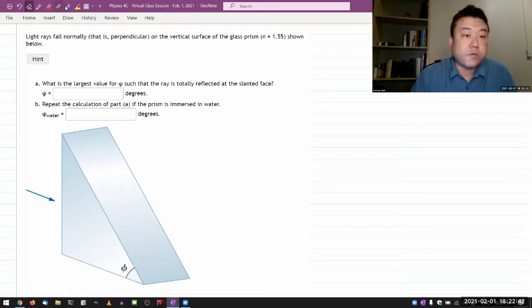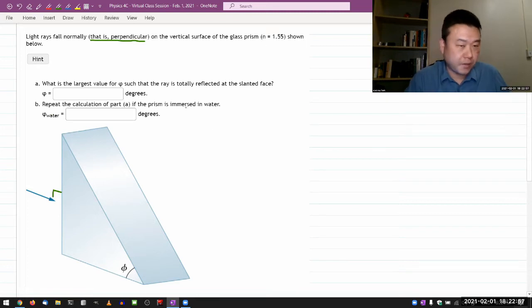All right, so this question says light rays fall normally, that is perpendicular, on the vertical surface of a glass prism shown below. This whole perspective view messes me up in terms of trying to figure out the geometry.